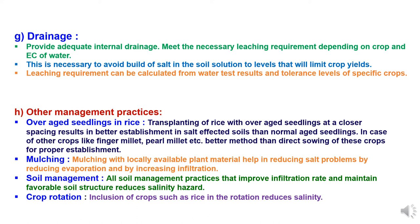Eighth method is other management practices, which include using over-aged seedlings in rice. Transplanting rice with over-aged seedlings at closer spacing results in better establishment in salt-affected soil than normal-aged seedlings. In other crops like finger millet and pearl millet, transplanting is better than direct sowing when there is the problem of poor irrigation water. Second is mulching — mulching with locally available plant material helps in reducing salt problems by reducing evaporation and increasing infiltration rate. Third is soil management — all soil management practices which improve infiltration rate and maintain favorable soil structure reduce salinity hazard. Crop rotation including rice reduces salinity through infiltration and leaching of water.